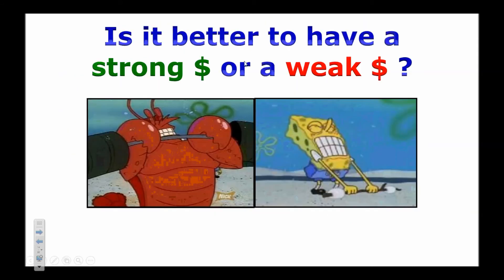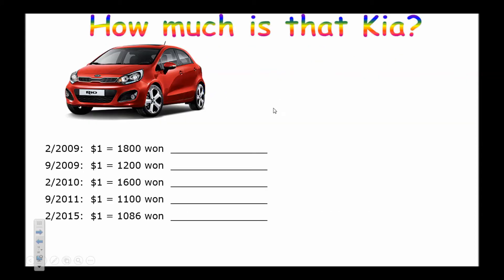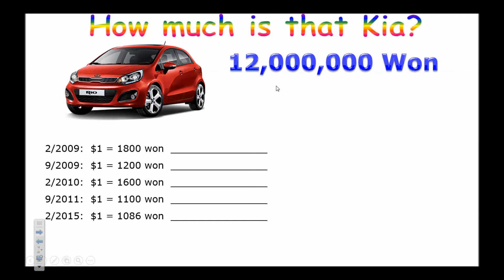Is it better to have a strong or a weak dollar? The answer is: it depends. We'll use the price of a Kia — which costs 12 million won (South Korean currency) — as our example. To find the dollar cost, take 12 million won and divide by the number of won a dollar can buy. These exchange rates are real rates tracked over time, so we can see what the car cost at different periods.